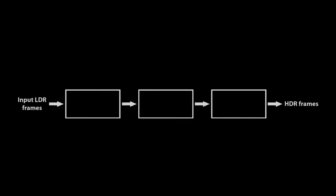Our method consists of three main components. First, initial motion is estimated using a homography for global motion and optical flow for residual local motion. Second, using the initial motion estimate, we estimate local search windows for every offset. These are computed as the smallest patch search window centered on the motion estimate that contains some good match.